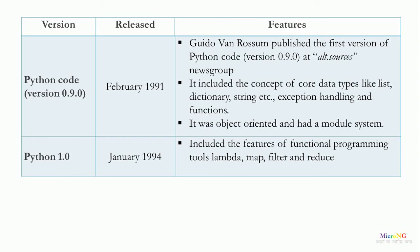The second version, Python 1.0, was released in January 1994. It included various functional programming tools: lambda, map, filter, and reduce.